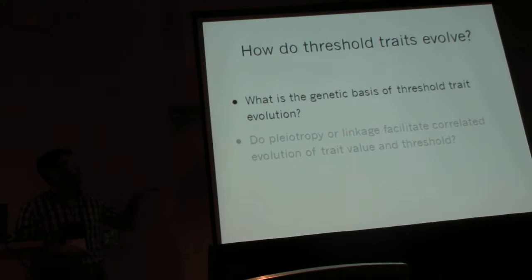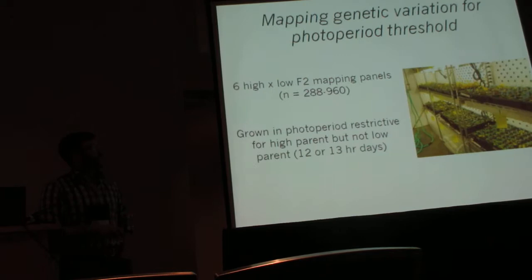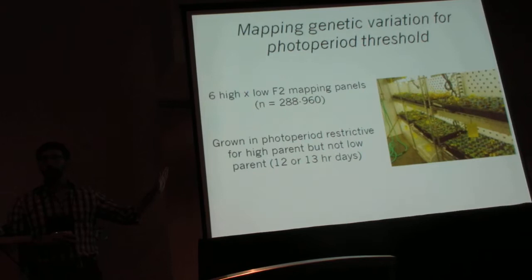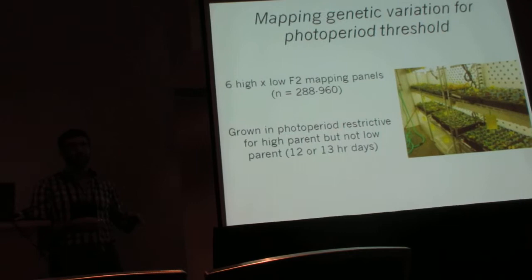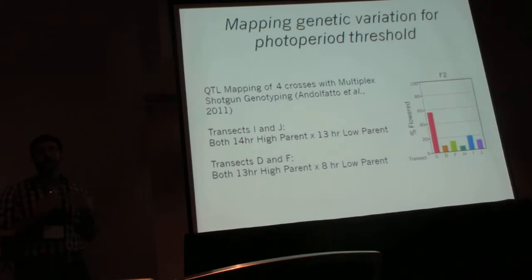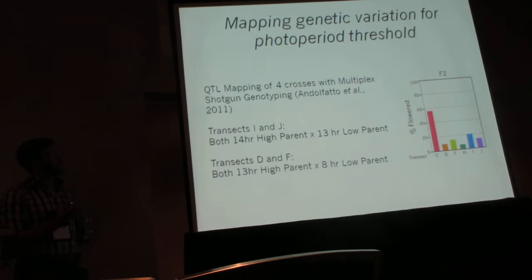Turning to questions about genetics and asking what's the genetic basis of this variation along elevational clines — to do this I crossed high and low elevation parents from multiple different transects, and grew up their F2 progeny in growth chamber conditions where the high elevation parent would not flower but the low elevation parent would. I took a QTL genetics approach and mapped the regions of the genome responsible for variation in whether or not the plants flower. These conditions differentiate the parents and they're segregating variation in the F2, giving us raw material to map.